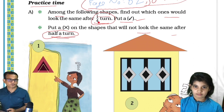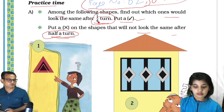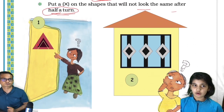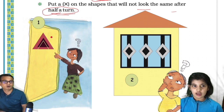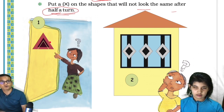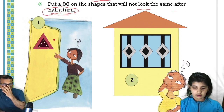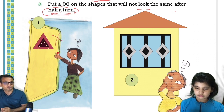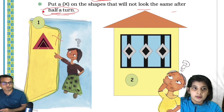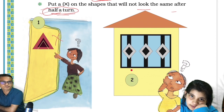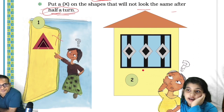In your book it is like this, right? Now after a quarter turn this shape will not look the same, so we don't have to cross it. And after a half turn it will also not be the same, so we have to put a cross — because we cross it if it is not the same after half a turn.